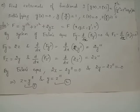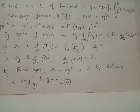Find the extremal of functional i of y of x, z of x equals integral 0 to pi by 2 of y dash square plus z dash square plus 2yz dx, satisfying the boundary conditions y of 0 equals 0, y of pi by 2 equals 1, z of 0 equals 0, and z of pi by 2 equals negative 1.